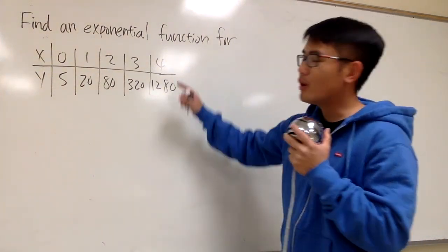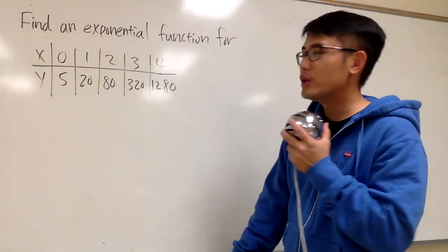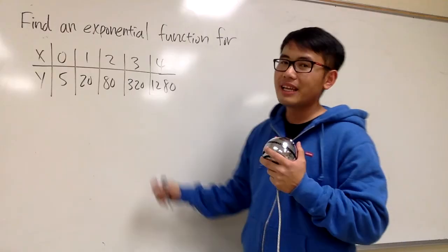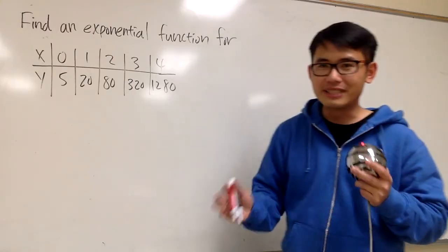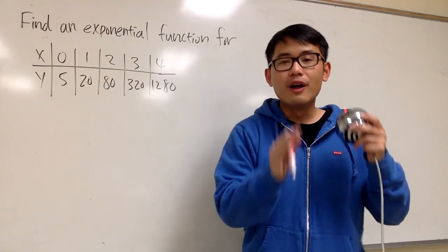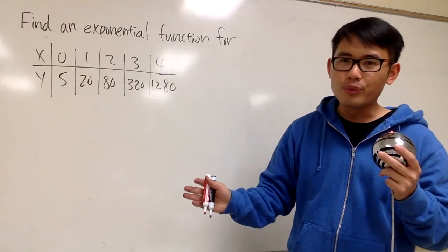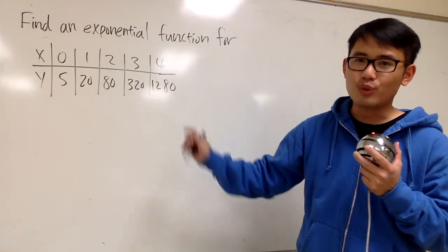In this question, we are given a table of some x and y values, and we are going to write an exponential function for this. Notice that this is similar to question number 7, and earlier we talked about that was for linear growth. In this case, let me show you why this is called exponential growth.